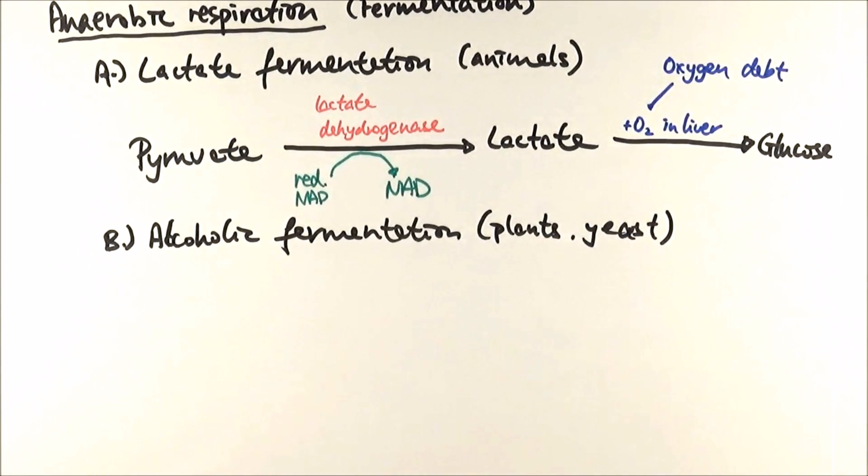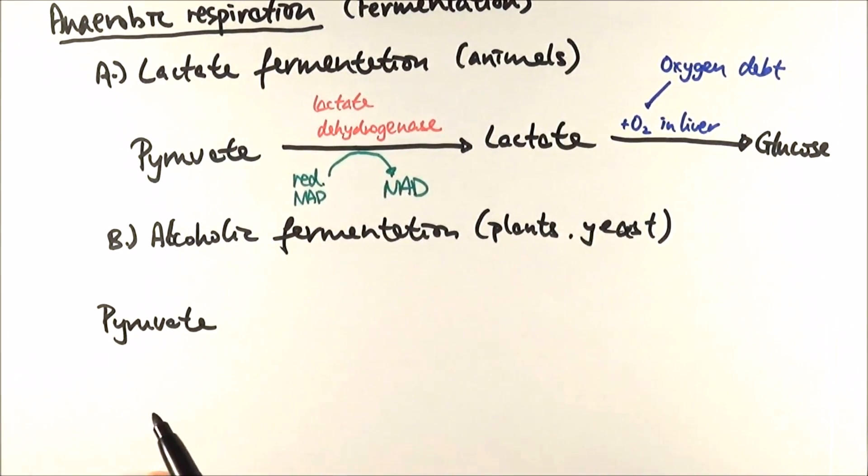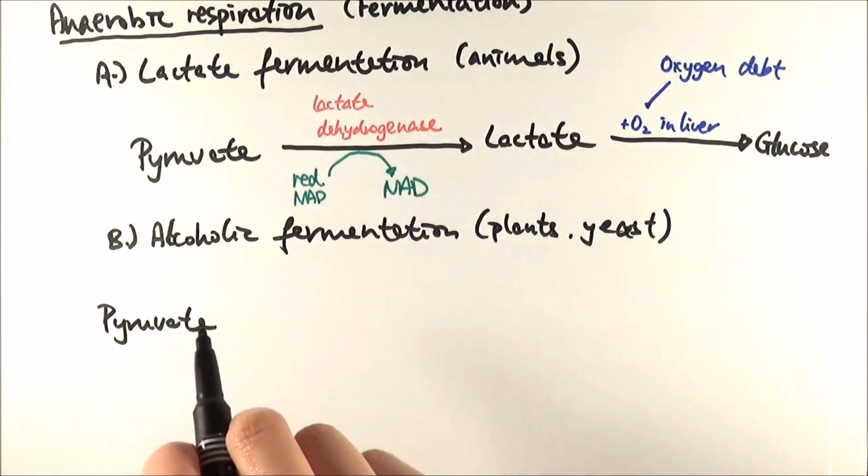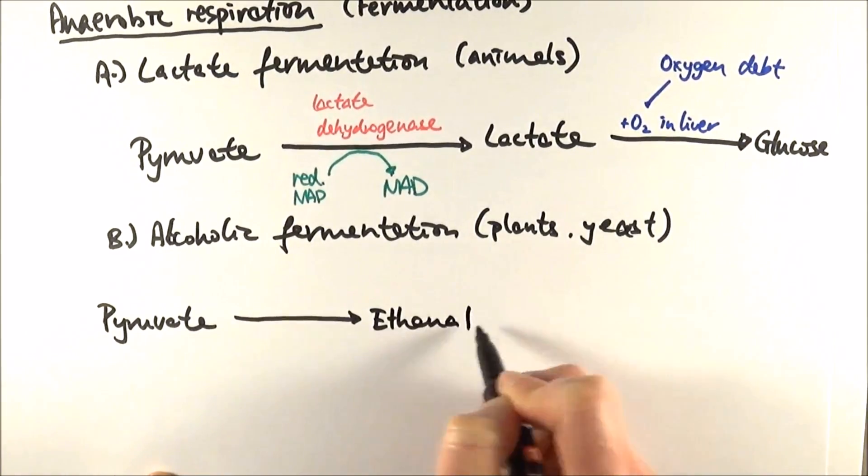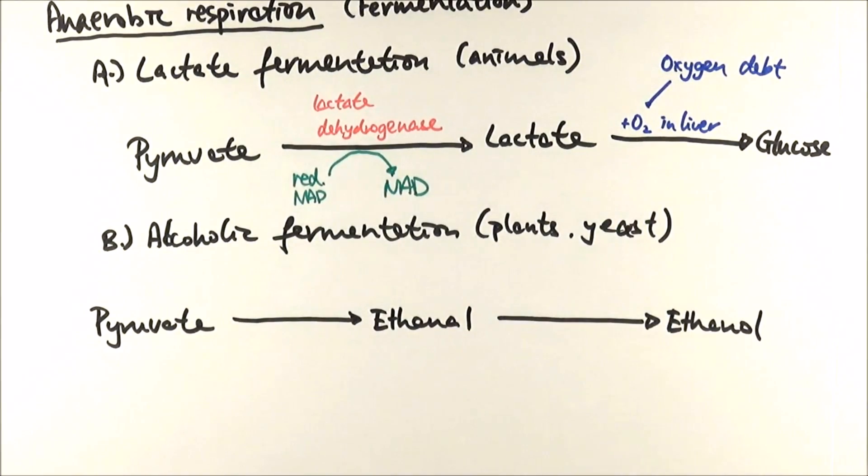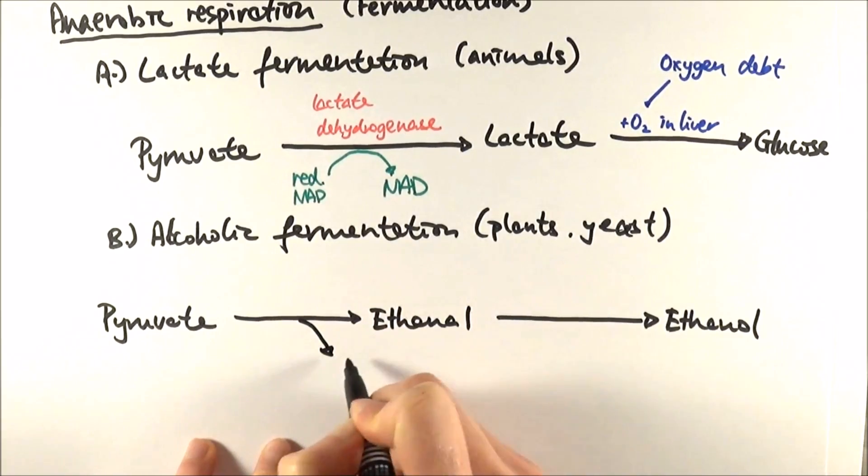Next, we'll think about alcoholic fermentation in plants and yeast. Again, we'll start with pyruvate. Yes, alcohol, meaning referring to ethanol specifically, but actually it forms ethanal first, and then after that, it makes ethanol. So in the first bit here, we lose a carbon dioxide from pyruvate to make ethanal.